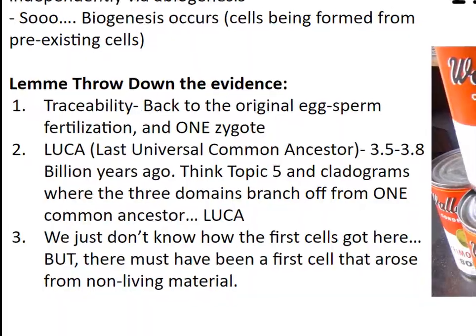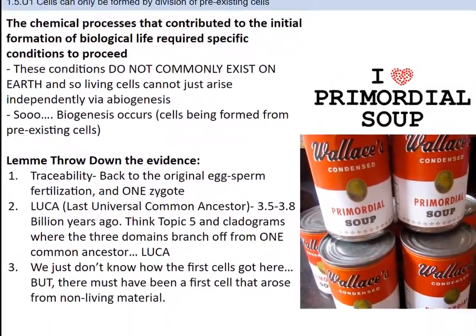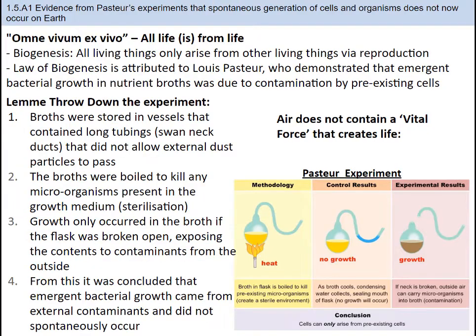Still one problem though — we just don't know how the first cells got here, but there must have been a first cell that arose from non-living material. One experiment related to biogenesis is by French scientist Louis Pasteur. He is known for creating the law of biogenesis. He was the first scientist to demonstrate that emergent bacterial growth in nutrient broths was due to contamination by pre-existing cells. Pasteur wanted to see if air had some ability to assist in the creation of living organisms — that it had a vital force. He concluded that it did not.